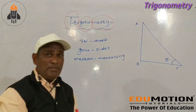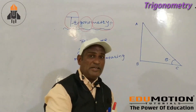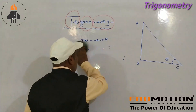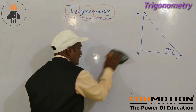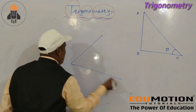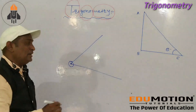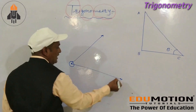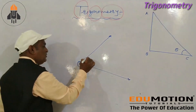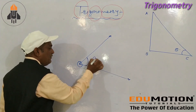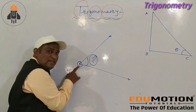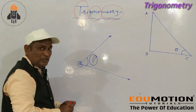Angles are represented using theta. First of all, what is meant by angle? Angle means it is the union of two rays which have a common end point. This common end point is also called the vertex, and that is where an angle is formed between the two rays.